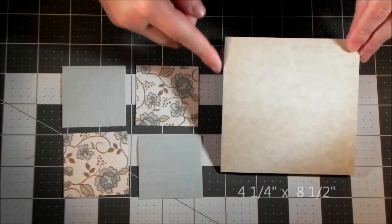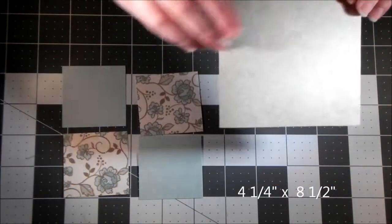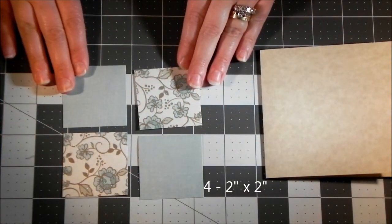To make this card you need a base that is four and a quarter by eight and a half, which is just folded in half so it's four and a quarter by four and a quarter, and four complementary squares that are two inches each.